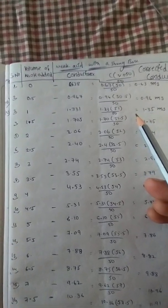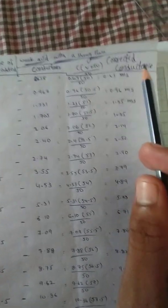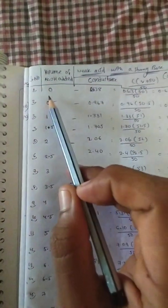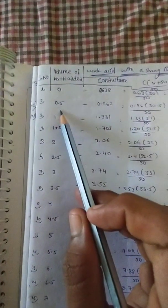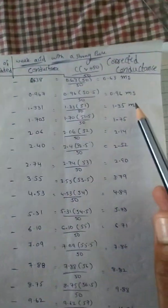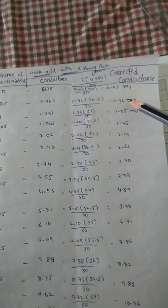In conductometric titration of a weak acid with strong base, first we have to determine the corrected conductance of the weak acid. When zero ml of sodium hydroxide is added, the obtained corrected conductance is 0.63 milli siemen. When 0.5 ml of sodium hydroxide is added, the obtained corrected conductance is 0.96 milli siemen. These are the values of corrected conductance of the weak acid.